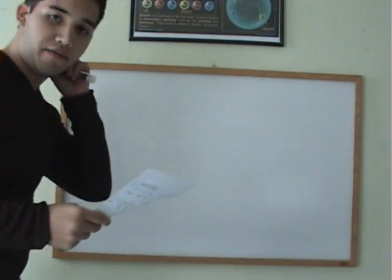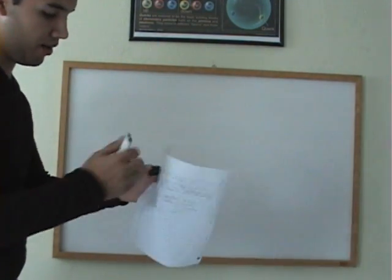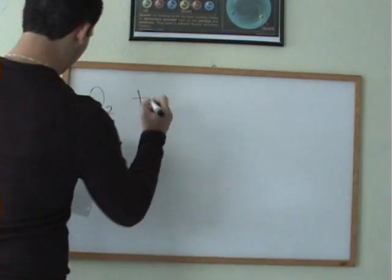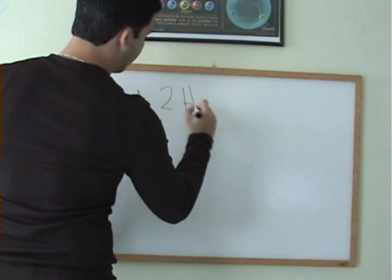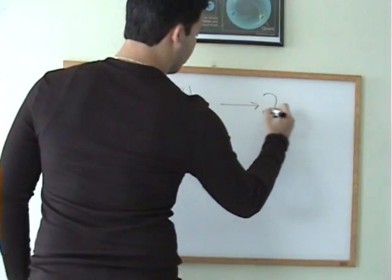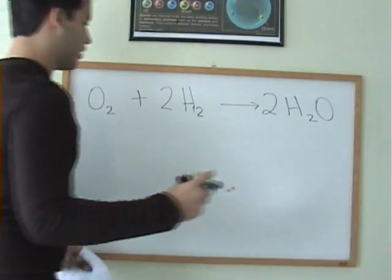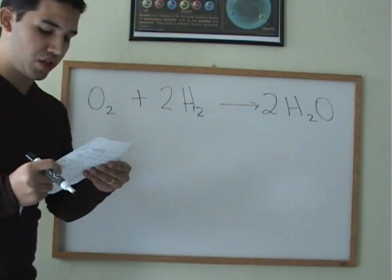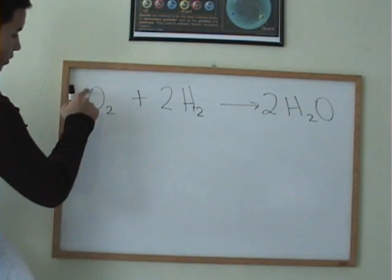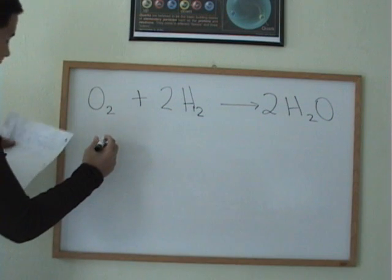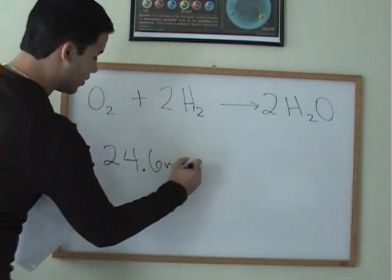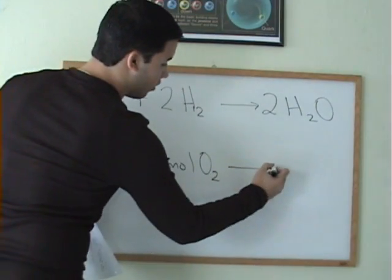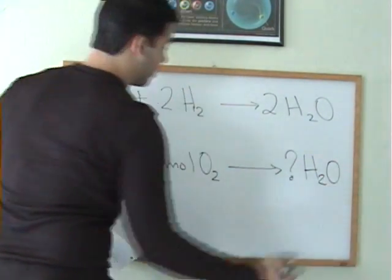The next problem that I'm going to give you is an actual chemistry problem. We have an oxygen molecule, two hydrogen molecules, and this yields two molecules of water. The question is, how many moles of water result from the complete reaction of 24.6 moles of oxygen? So, if I had 24.6 moles of oxygen, how many moles of water can we make?